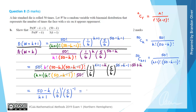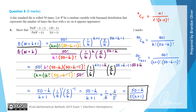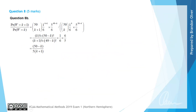Simplifying further: we have (50 minus K) divided by (K plus 1), multiplied by (1/6), and since the power of negative 1 means the reciprocal, that's multiplied by 6/5. The 6's cancel, giving us the final answer: (50 minus K) divided by 5(K plus 1). That matches what we were asked to show, so we're done with part B. The examiner's report shows essentially the same approach.